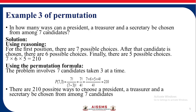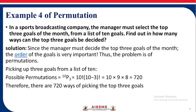So there are 210 possible ways to choose a president, a treasurer, and a secretary from 7 candidates. Fourth example: In a sports broadcasting company, the manager must select the top 3 goals of the month from a list of 10 goals. Since order is important, this is a permutation problem. The possible permutations are 10P3 = 10 factorial upon (10 minus 3) factorial = 10 into 9 into 8 = 720. So there are 720 ways of picking the top 3 goals.